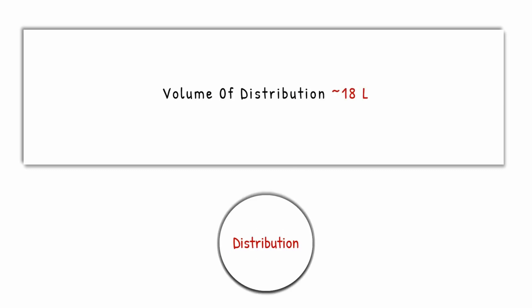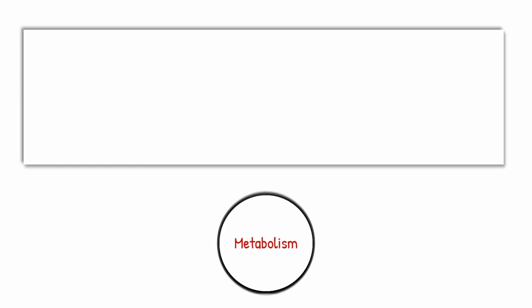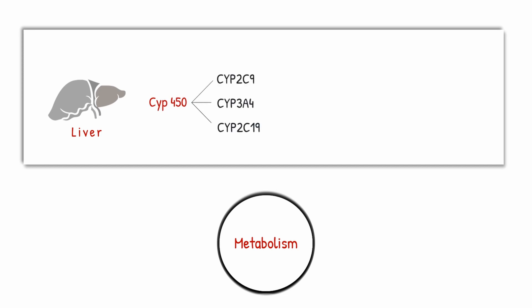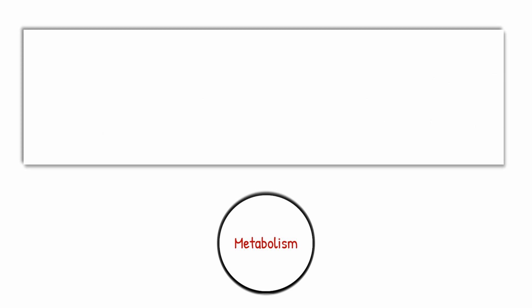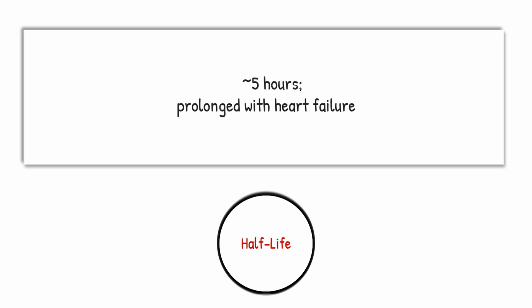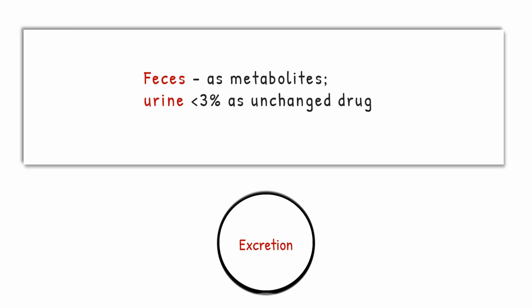Coming to pharmacokinetic parameters: the apparent volume of distribution for Bosentan is 18 liters. Plasma protein binding is 98%, primarily to albumin. Bosentan is metabolized in the liver via CYP450 enzymes — CYP2C9, CYP3A4, and possibly CYP2C19 — producing 3 metabolites, one of which is pharmacologically active and may contribute 10–20% of the total activity of the parent drug. Bioavailability is 50%, half-life is 5 hours and may be prolonged in heart failure, and peak plasma concentration is attained at 3–5 hours. Bosentan is excreted via feces as metabolites and in urine with less than 3% as unchanged drug.